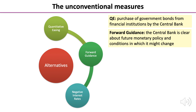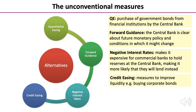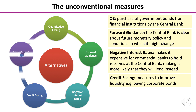Another aspect of unconventional monetary policy is negative interest rates. This makes it expensive for commercial banks to hold reserves at the central bank, making it more likely they will lend instead. Credit easing involves measures to improve liquidity, buying corporate bonds in order to further increase liquidity in the banking sector.